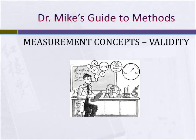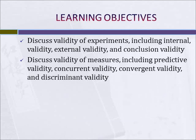Hi everybody, Mike Slater here, and this podcast is going to cover a measurement concept, specifically validity. By the end of this podcast, you should be familiar with the validity of experiments, including external validity, internal validity, and conclusion validity. You should also be familiar with the validity of measures, including predictive, concurrent, convergent, face, content, and discriminant validity.